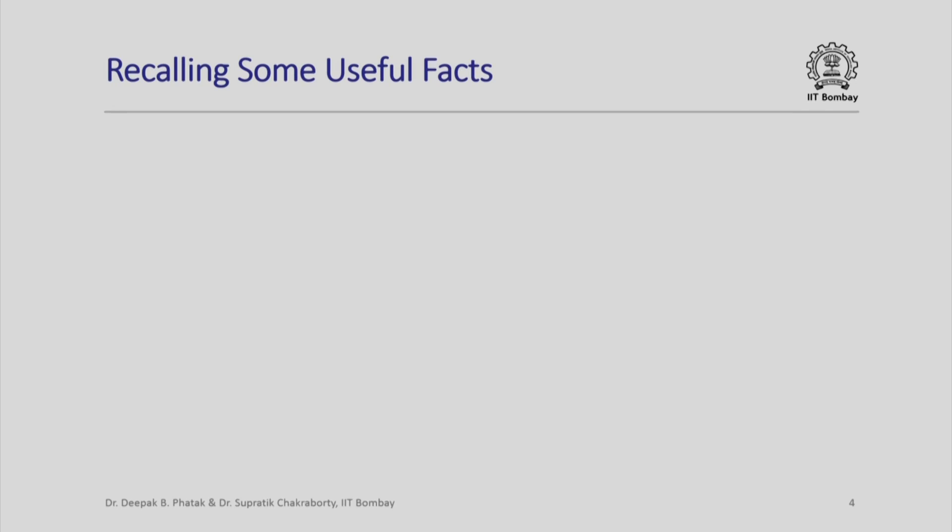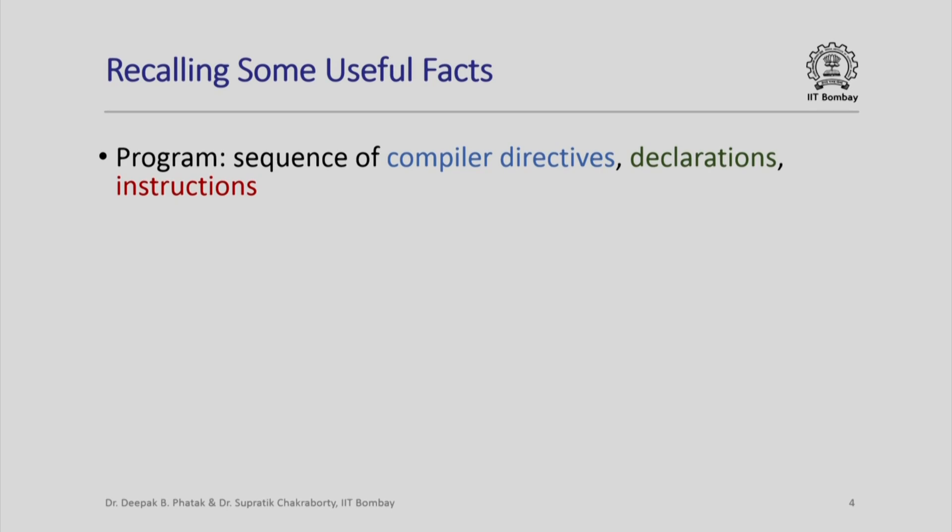Before we get going, let us recall some useful facts. A program is basically a sequence of compiler directives, declarations and instructions. The compiler directives are instructions to the compiler that it uses when it tries to compile your C++ program to the machine's language, to the computer's internal language.